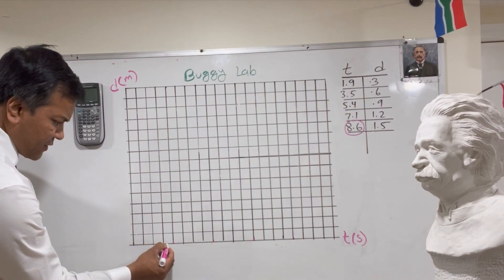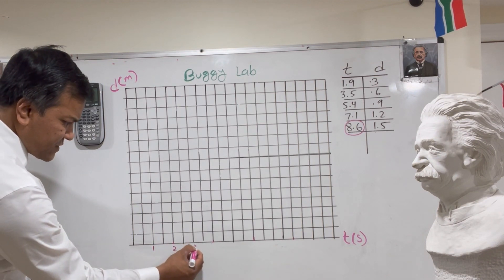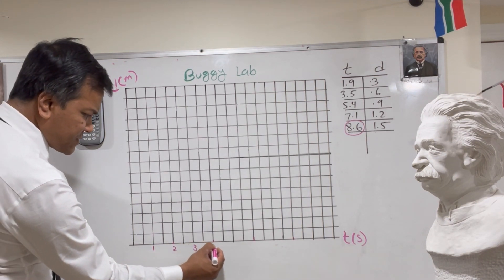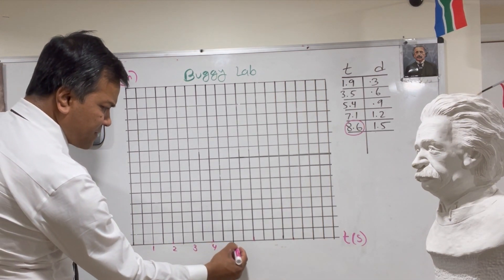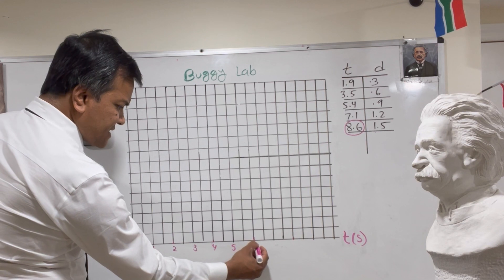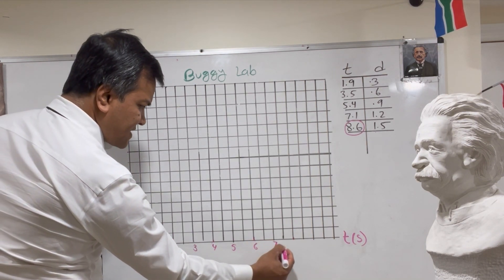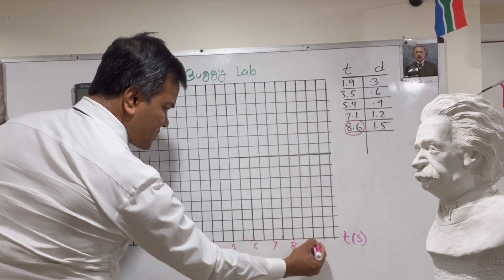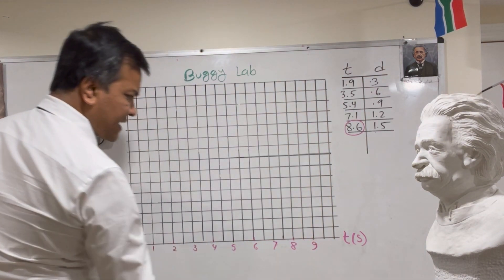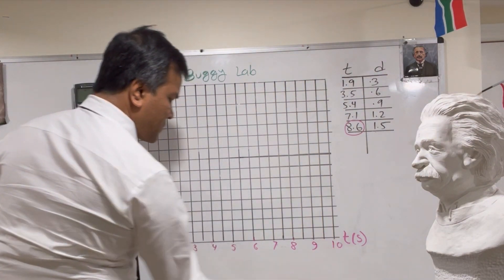We're marking the time axis from 1 second up through 10 seconds, counting each interval. We can go all the way to 10 seconds, no problem.